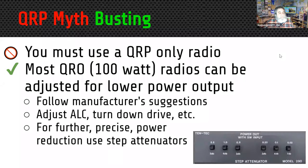On the myth that you must use a QRP-only radio: most 100-watt radios can be adjusted for lower power operation, so you don't need a new radio to operate QRP. Follow the manufacturer's suggestions — sometimes it means adjusting the ALC or turning down the drive. For further precise power reductions you can also use step attenuators; a lot of people operating very low power use step attenuators to reduce their transmit signal from one watt down to a tenth of a watt.